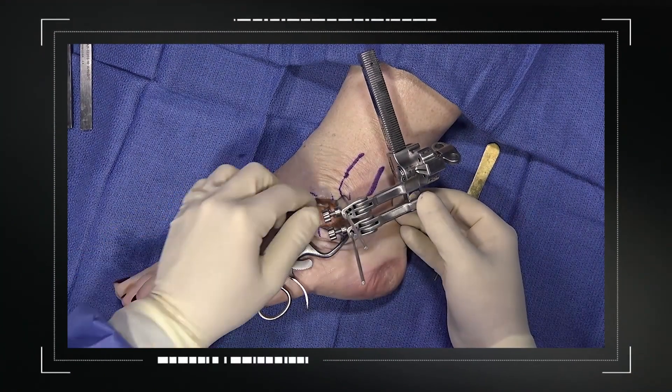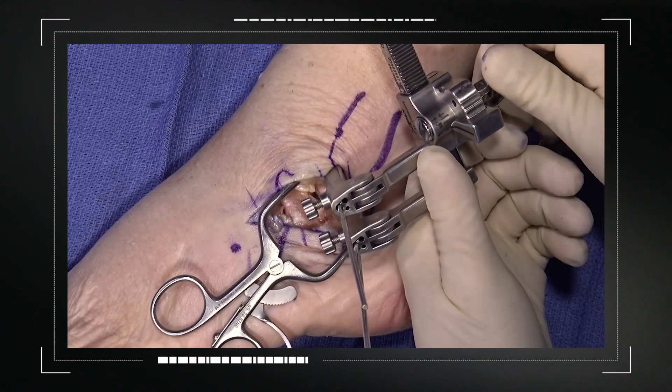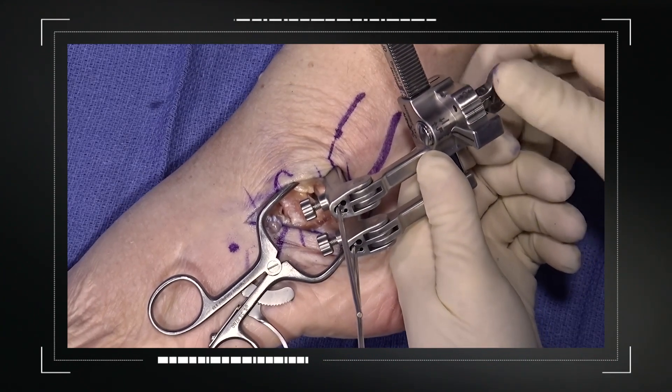Here we see Dr. Schweitzer using the mini joint distractor for a triple arthrodesis in a cadaveric setting. He's able to fully distract the joint to get easy access for joint preparation.